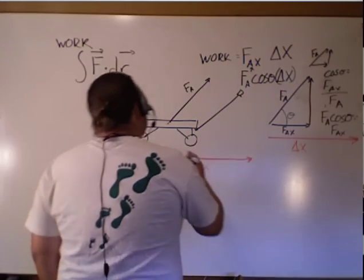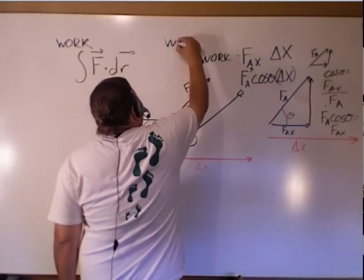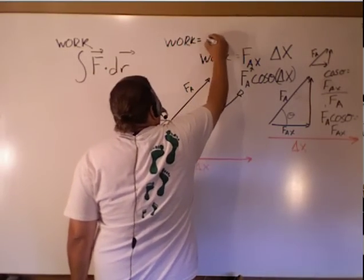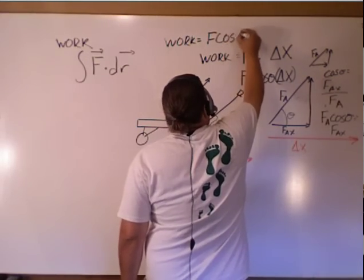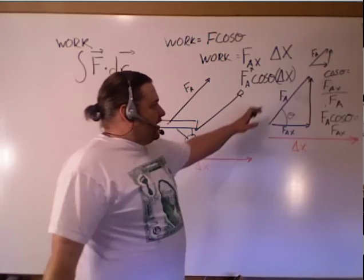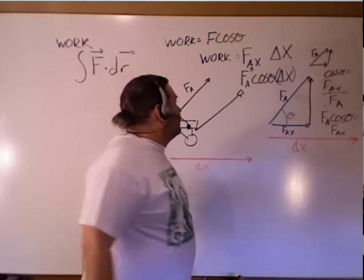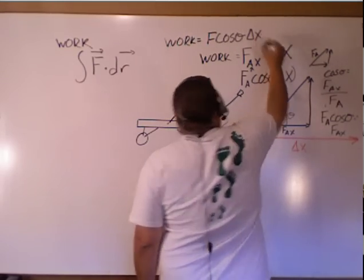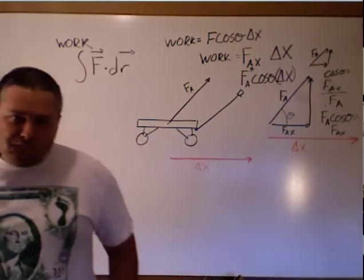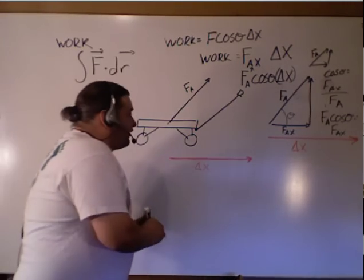So what you are going to see in most textbooks is that work is equal to a force times the cosine of the angle in between that force and the displacement times the displacement. That is what you're going to see in most textbooks.